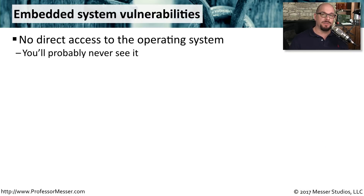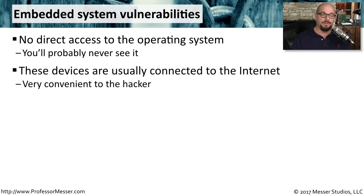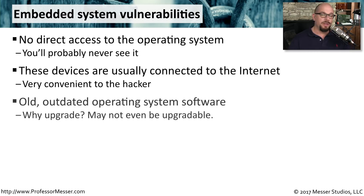We use embedded systems all the time. Just in our homes, we have doorbells, microwave ovens, and wireless routers that use embedded operating systems. We don't have any direct access to the operating system — we're simply using a user interface on the front of that device. These devices very often are connected to the internet, which makes it really convenient if somebody wants to gain access to these systems. Usually they're running an outdated version of software, because embedded systems aren't usually upgraded. The system is self-contained, it rarely changes, and therefore upgrades aren't always seen as necessary. But if these embedded systems aren't updated with the latest security patches, they could be vulnerable to new exploits.